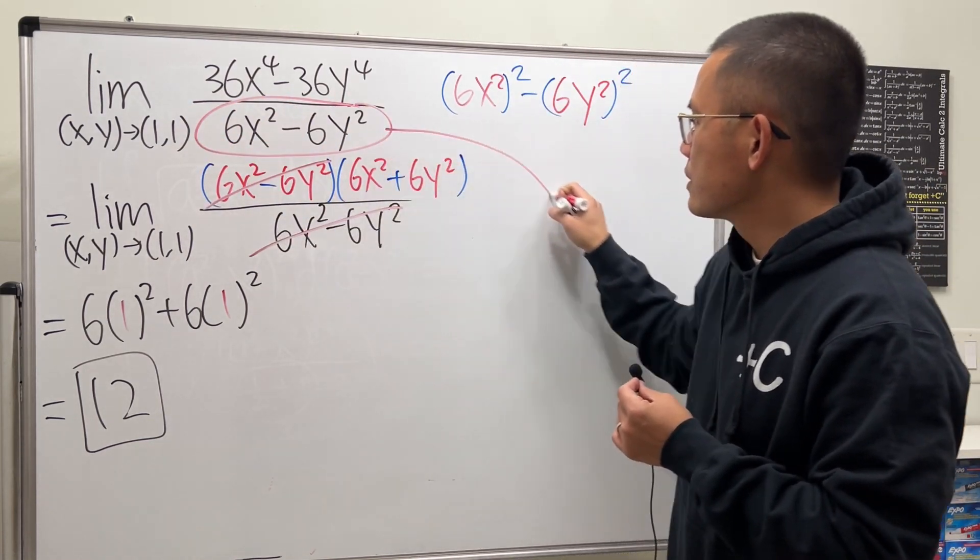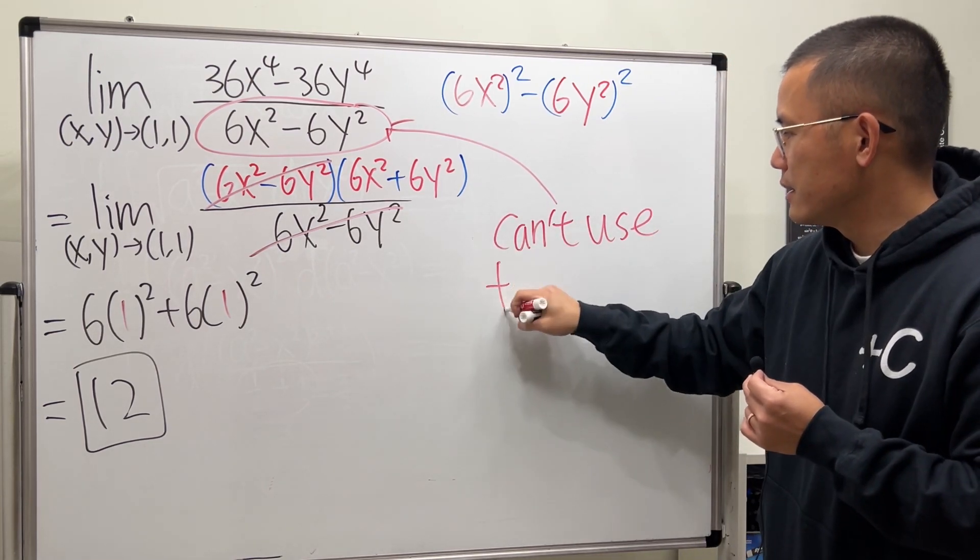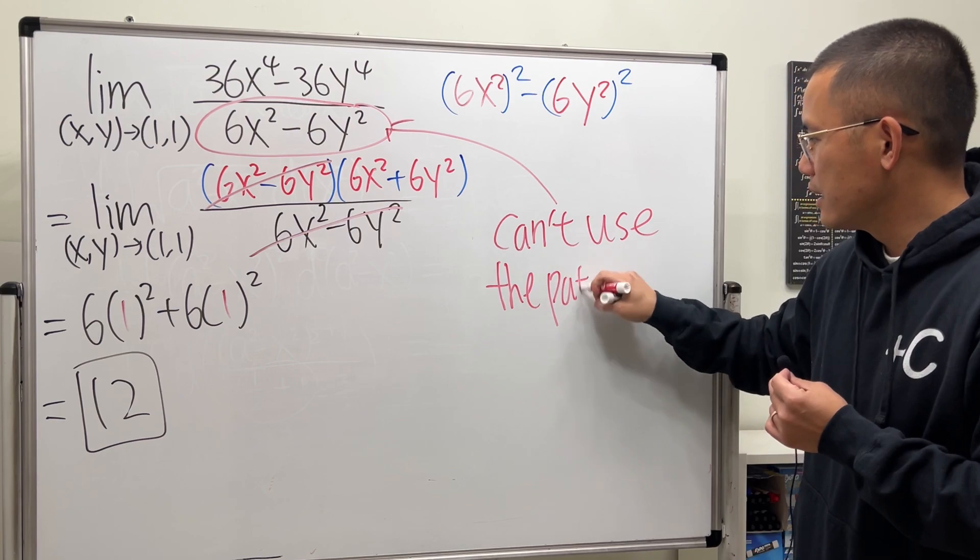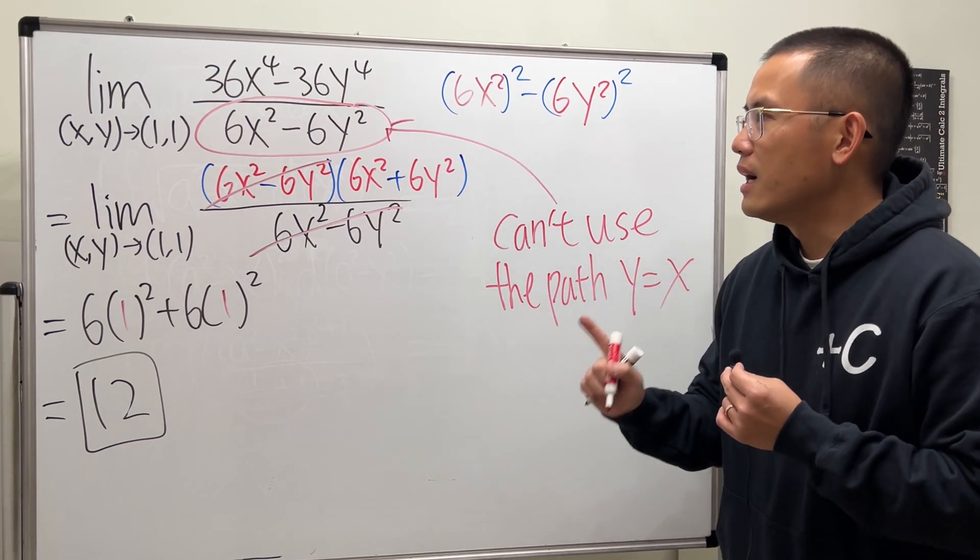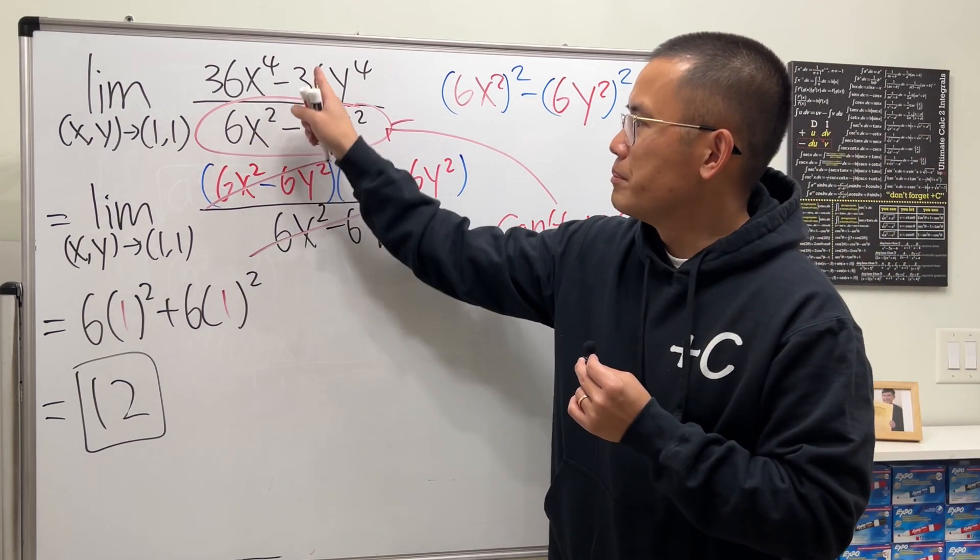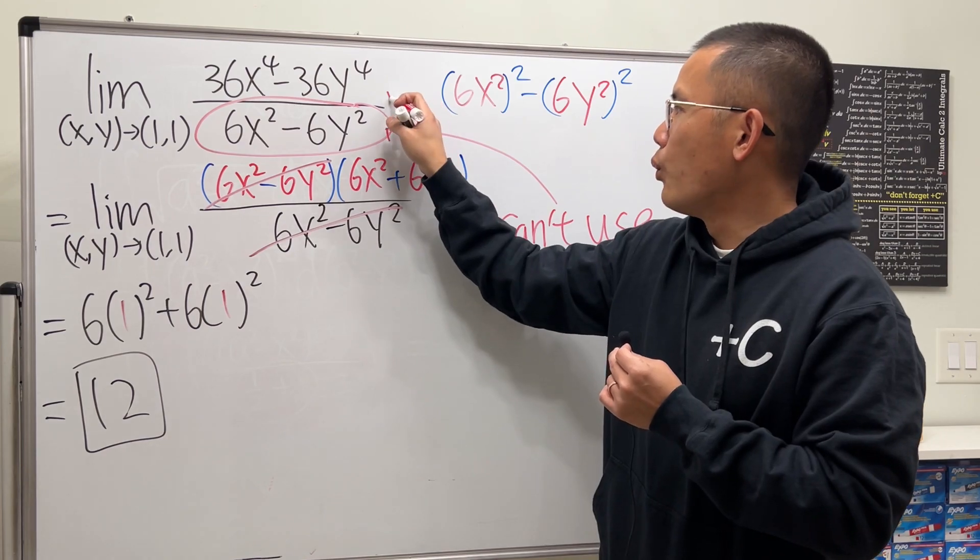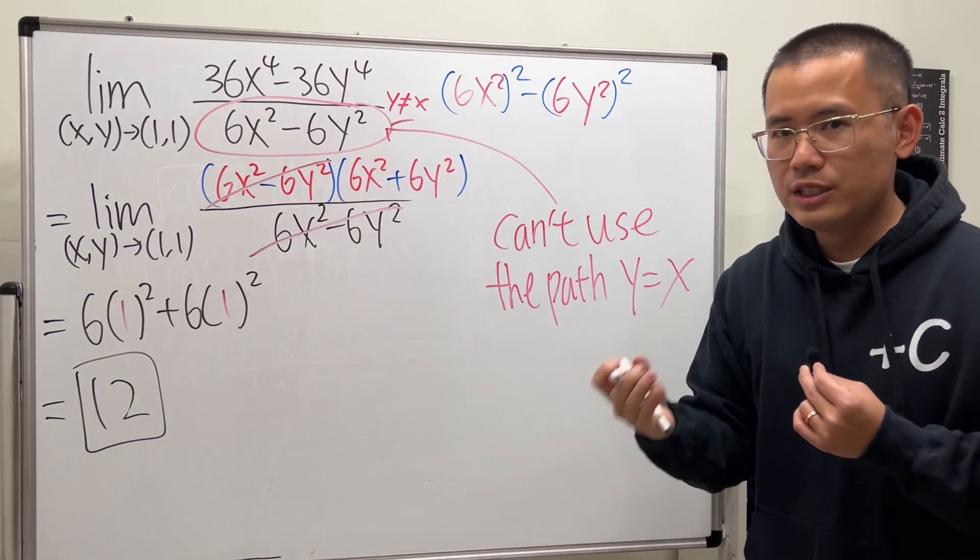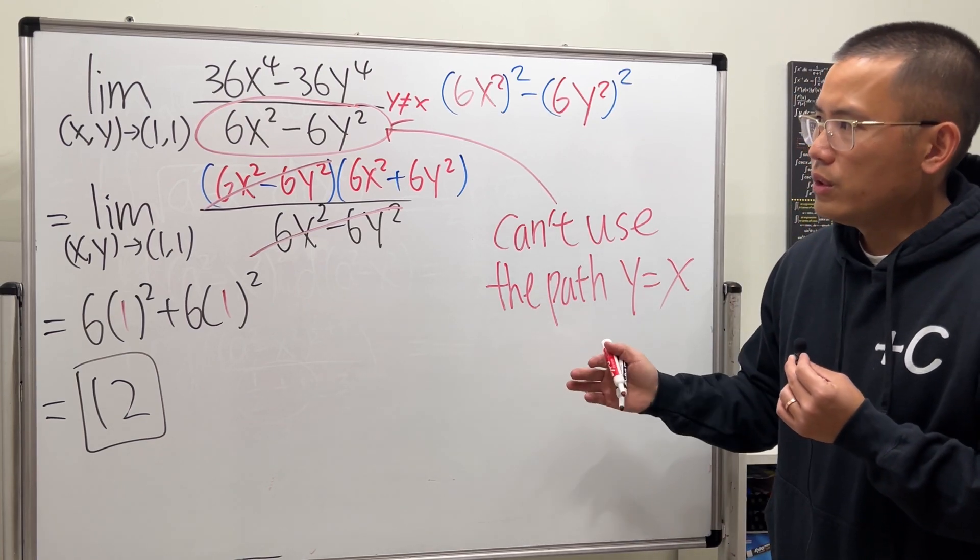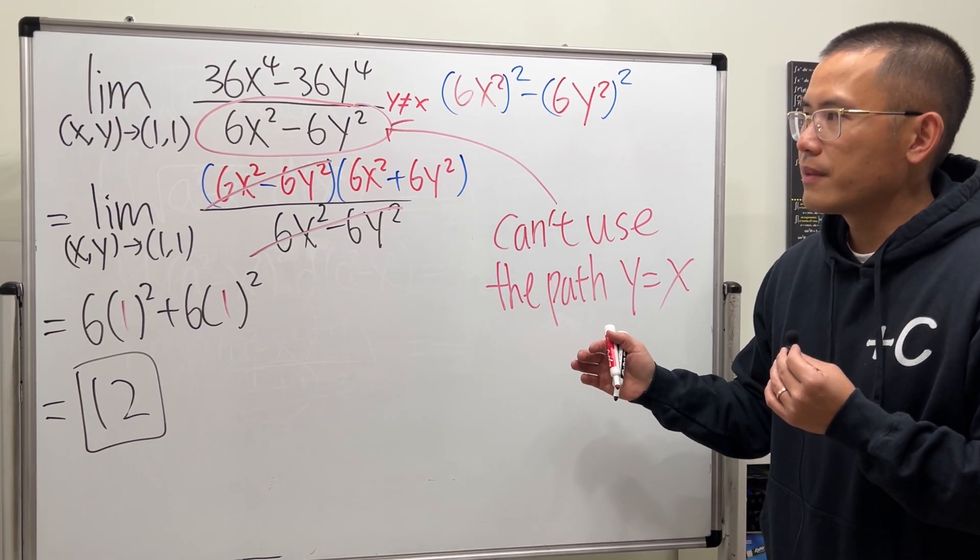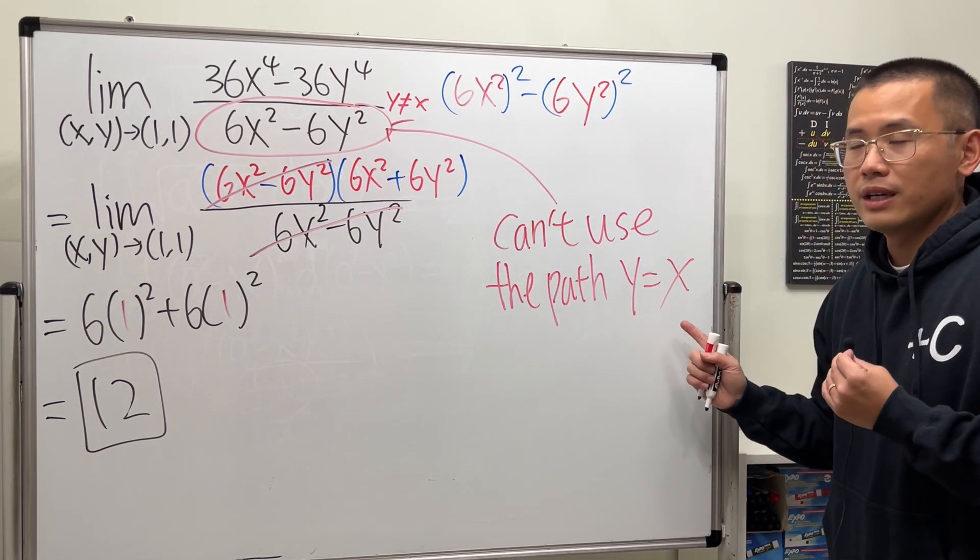You can't use the path y = x, because on the bottom, based on how the function is written, you can see that y cannot be equal to x - otherwise you get zero on the bottom right away. So that's a no-go. If you want to approach (1, 1) with different paths, you cannot use y = x.